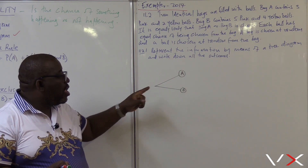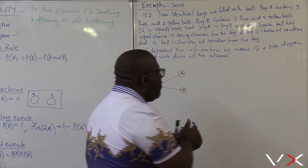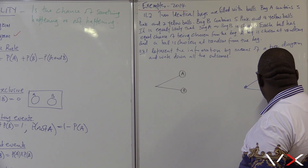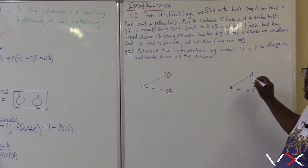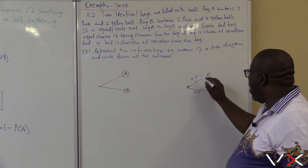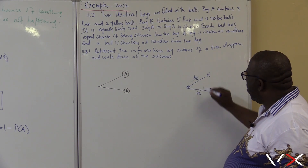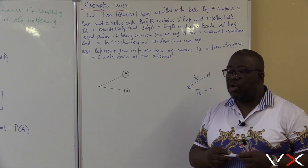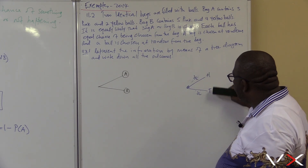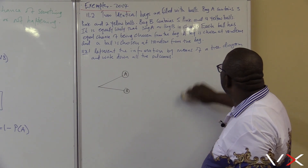If I flip a coin, I might either get a head or a tail. The probability of getting a head is one half, and the probability of getting a tail is one half. When you add those two, you get one. So whenever you add the branches, they must always give us one. These branches will give us the outcomes.